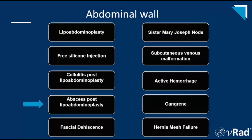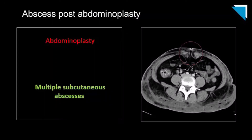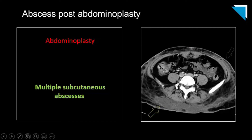Our next case is abscess following lipoabdominoplasty. On a single axial slice from a contrast-enhanced CT, we see evidence of a prior abdominoplasty with the typical crowding of the rectus muscles in the midline. As we move further down, we see multiple peripherally enhancing fluid collections which contain foci of air, compatible with abscesses. Anteriorly, we see the smaller collection overlying the left iliac crest at the site of the ventral incision, and posteriorly along the liposuction cannula track, a larger abscess.